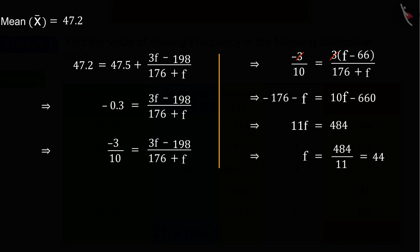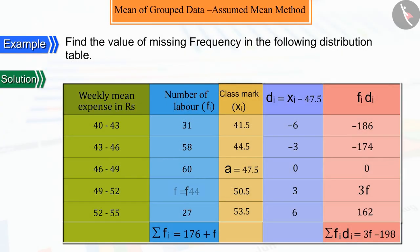we get f equals to 44. Therefore, the value of the missing frequency is 44.